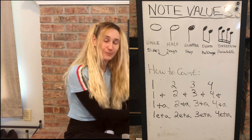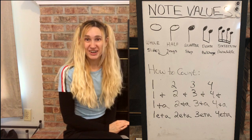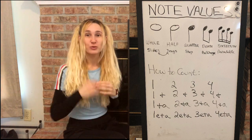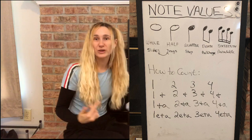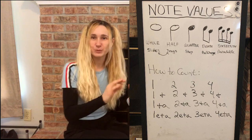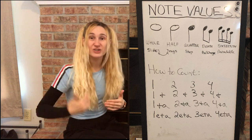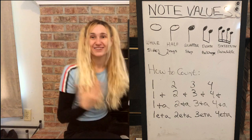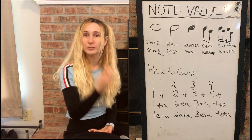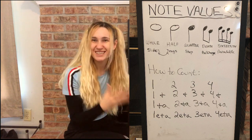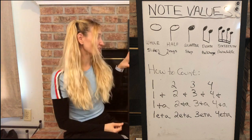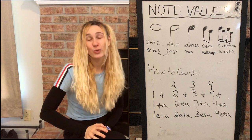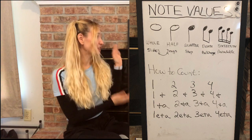For sixteenth notes you add another letter — 'e': one-e-and-a, two-e-and-a, three-e-and-a, four-e-and-a. It rolls off the tongue nice and fast. Your paradiddles go five-e-and-a, six-e-and-a, seven-e-and-a, eight-e-and-a. You add that 'e' and now you can verbally communicate to your students, or to yourself, how the rhythm is supposed to go. This is assuming straight rhythms; we can talk about syncopation in another video.